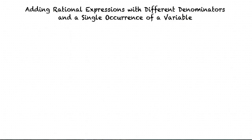This video will cover adding rational expressions with different denominators and a single occurrence of a variable. To add or subtract two fractions with different denominators, we rewrite the fractions with a common denominator and then add or subtract the numerators. Let's break it down with an example.